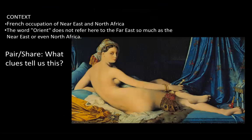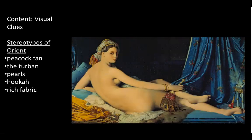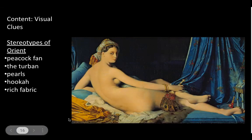The French were occupying parts of the Near East and North Africa — Napoleon had been in Egypt. In this context, the word 'Orient' refers more to the Near East and North Africa than the Far East. Looking around the artwork, you can find visual clues hinting to this region: a peacock feather fan, a turban, pearls dangling from a headband, jewelry on her wrist, a hookah on the far right, and rich luxurious fabrics. These are stereotypes of the visual Orient, making it feel more exotic than it actually is.